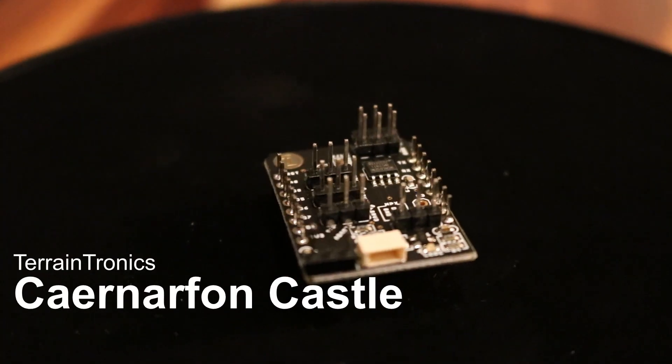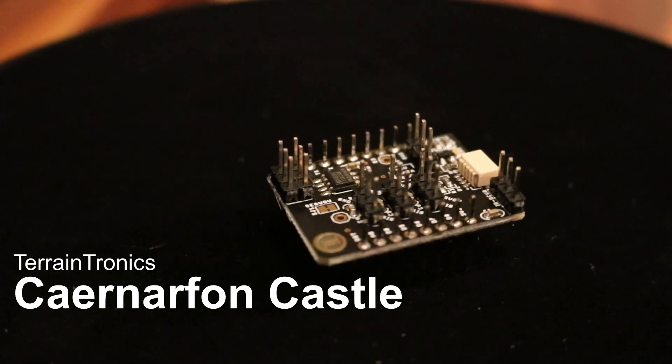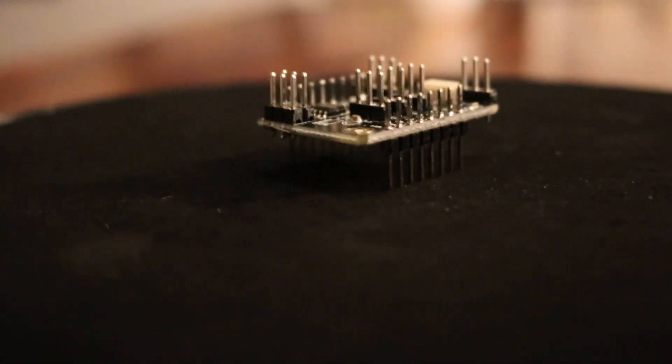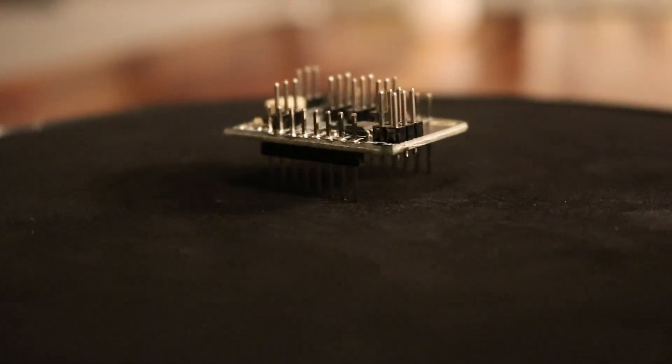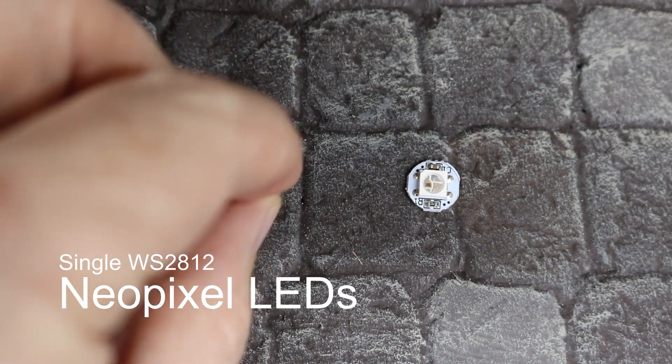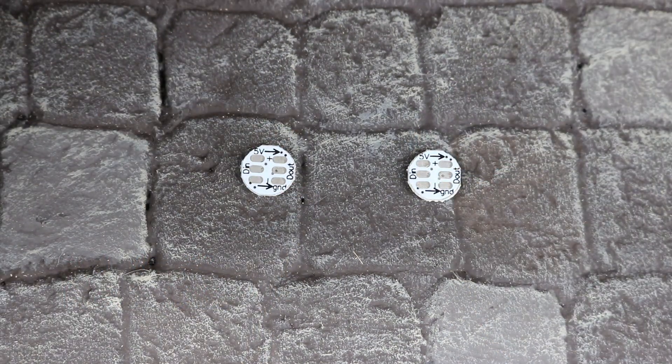Acting as an interface or a bridge to the rest of the world is the Terrain-tronics Carnarvon castle board. It has the ability to drive three servo motors or doors, use an external infrared receiver, and communicate with addressable LEDs. These LEDs communicate in a daisy chain, and providing they are hooked up correctly, the software takes care of it all.